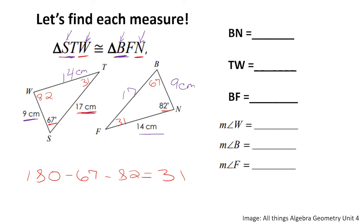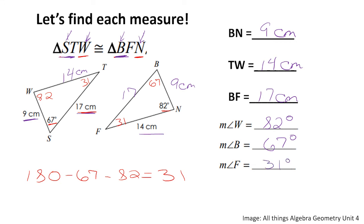Side WT is congruent to FN, so WT is 14 centimeters. We can now fill in all the blanks: BN is 9 centimeters, TW is 14 centimeters, BF is 17 centimeters, angle W is 82 degrees, angle B is 67 degrees, and angle F is 31 degrees. We've filled in all the measures using what we know about congruency statements.